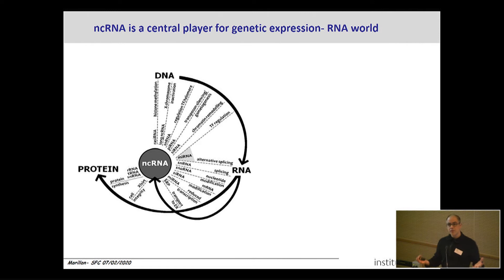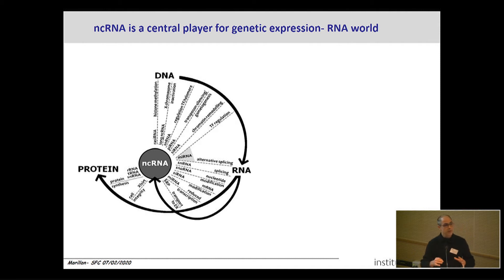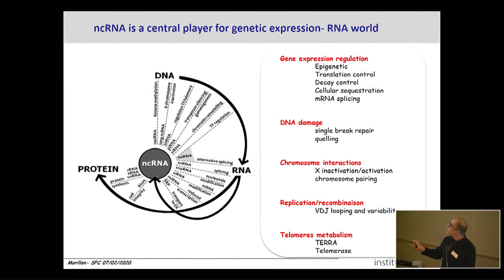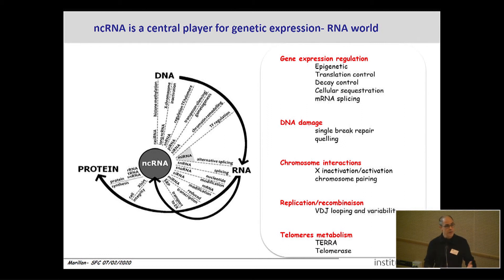From all of these studies and the emergence of non-coding RNA families, the concept of an RNA world is back in business, where non-coding RNA plays a central role in every aspect of gene expression — from DNA control, packaging, RNA stability, expression processing, and protein expression. But beyond gene expression regulation, there are more and more examples of non-coding RNAs playing a fundamental role in DNA damage, chromosome interaction, looping and chromatin folding, replication, recombination, and telomere metabolism. These RNAs are very important to control, regulate, and fine-tune all aspects of DNA metabolism.